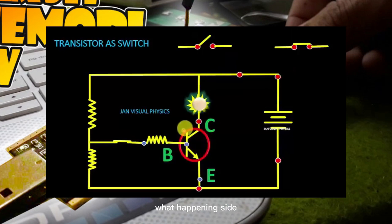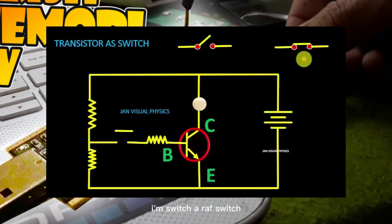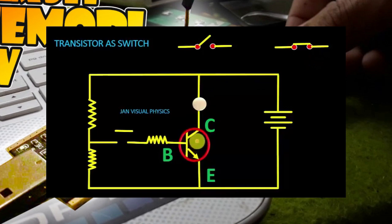What happens inside a transistor when it behaves like an on switch or off switch? This is covered in a separate video: the anatomy of a transistor as a switch.